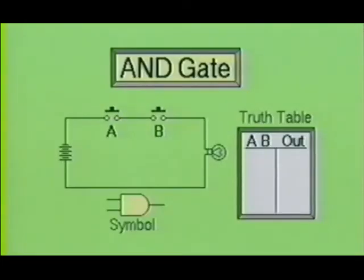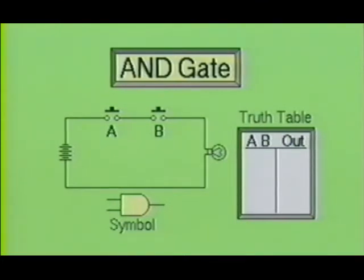Here we see a simple circuit using two switches, A and B, and a lamp as the load. This simple circuit can be used to illustrate the basic operating principles of the AND gate. Switches A and B are normal open switches. You should also note that a truth table has been placed by the AND gate symbol.